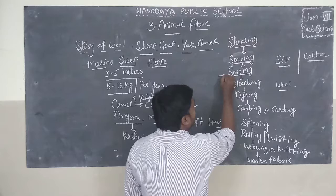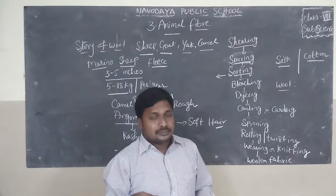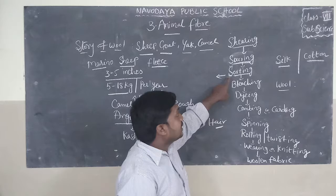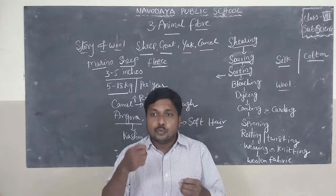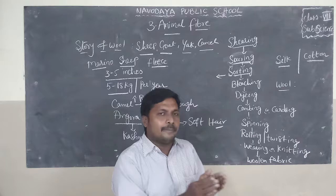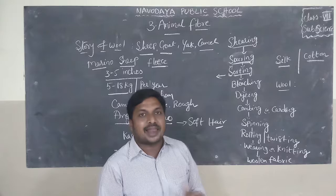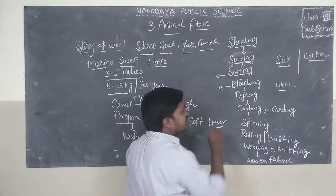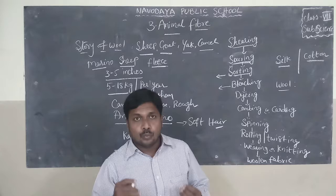Next is sorting. Sorting means classifying. If any dust, dirt, twigs, dry leaves, or waste material is present in the wool, it can be separated during the process of sorting. Next is bleaching. Bleaching helps to clean the wool.